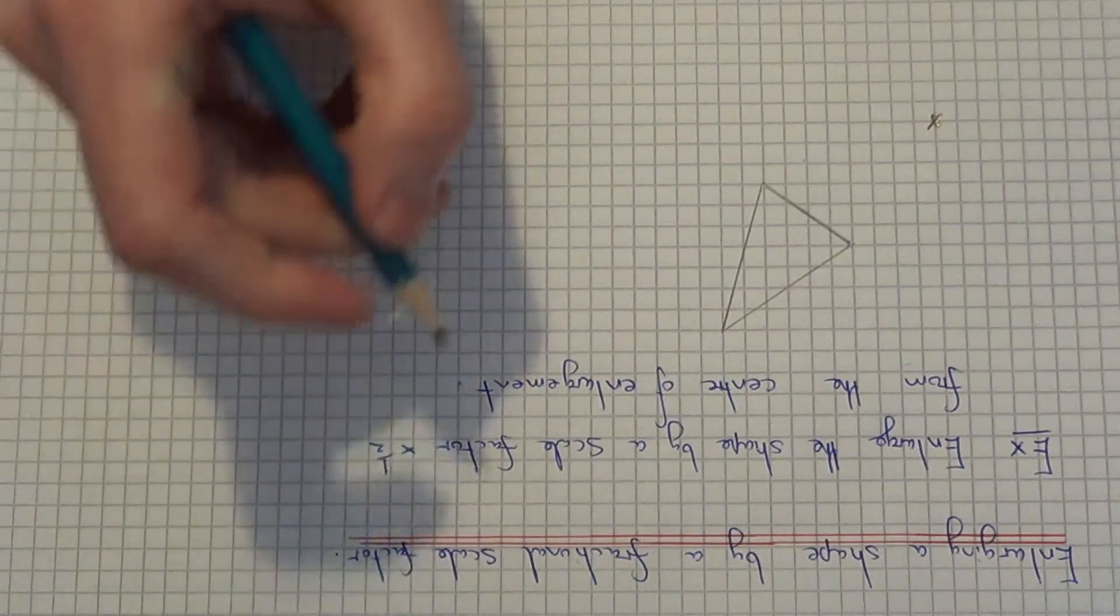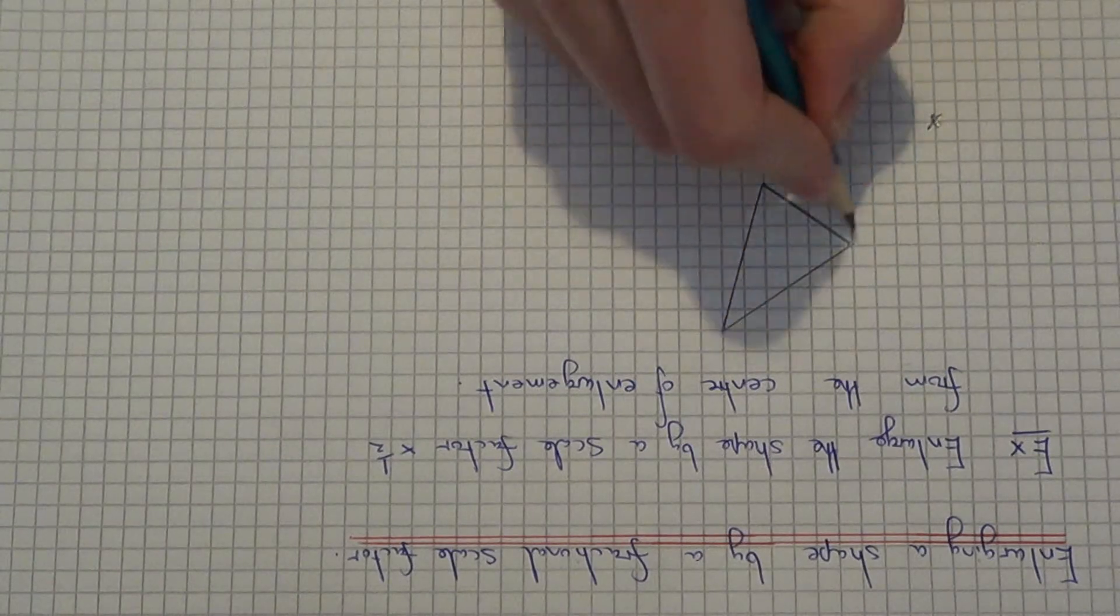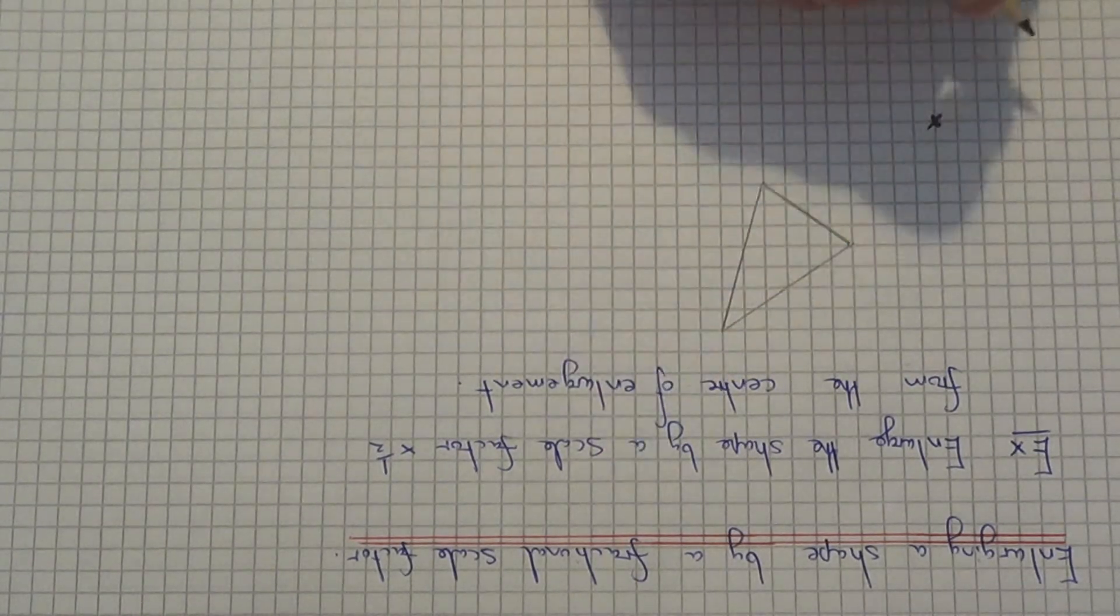So the easiest way to do this then is to count the distance from the centre to each of your three corners.